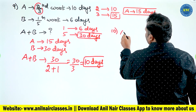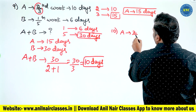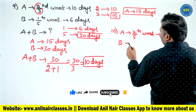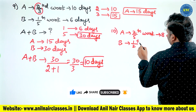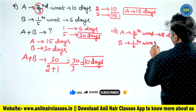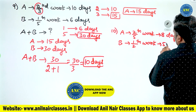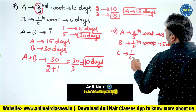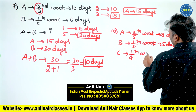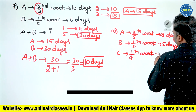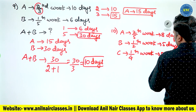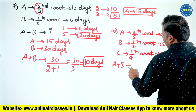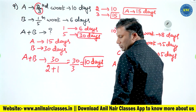A will do two-fifths work in eight days. B will do half the work in five days. C will do one-fourth work in five days. A plus B plus C will do the work in how many days? Try to solve.